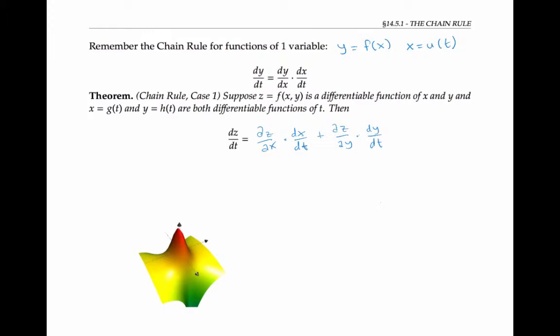A useful way to remember this formula is to draw a tree of variables. z is a function of x and y. x and y are both functions of t. To get the formula for dz/dt, we follow each branch of the tree that terminates in the t variable. That is, we multiply dz/dx by dx/dt and add dz/dy times dy/dt.